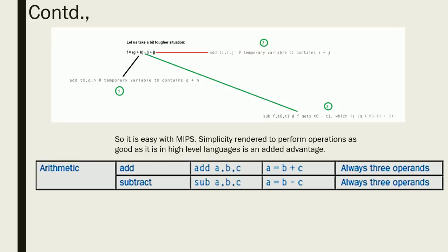Here's a more complex example: f = (g + h) - (i + j). First, g + h is performed; second, i + j is performed; then the subtraction is done. In MIPS: 'add t0, g, h' — the temporary register t0 gets the result. Then 'add t1, i, j' — t1 gets that result. Now with t0 and t1 ready: 'sub f, t0, t1'.